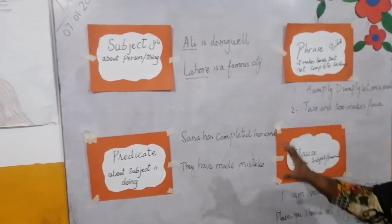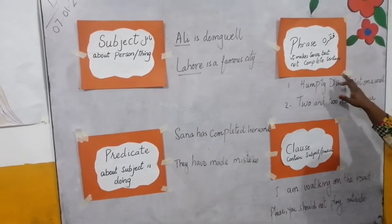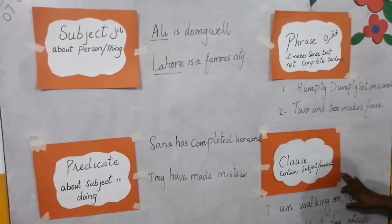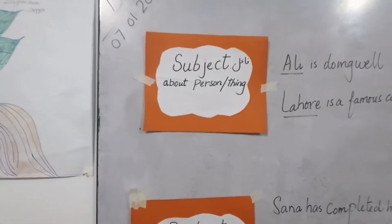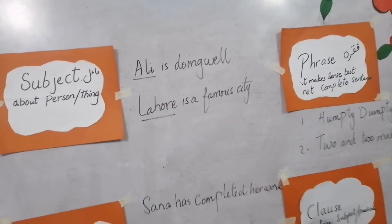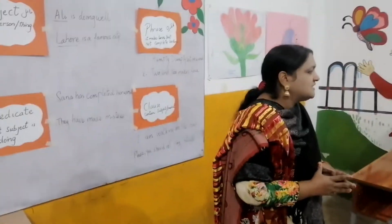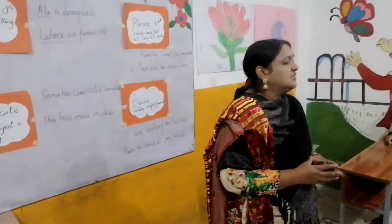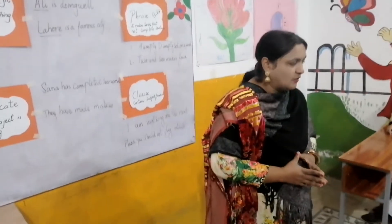Today our topics are two components: subject and predicate, and another one is phrase and clause. Most of the time you have encountered sentences where you read about subject and predicate but don't know how to differentiate among these words. Subject, predicate, phrase, and clause are the most important parts of sentence making, and when you read a sentence you must identify what is the subject and what is the predicate.